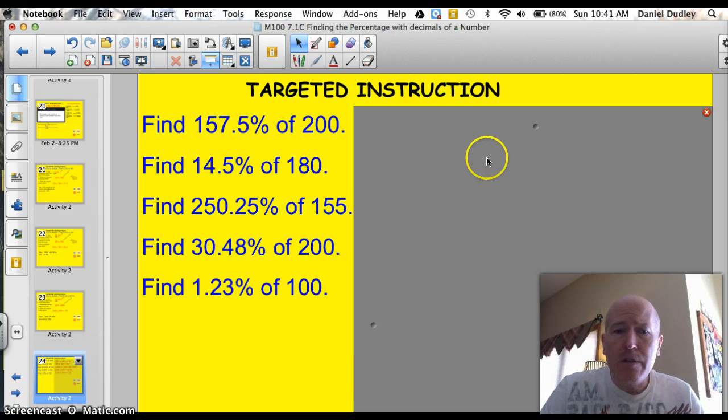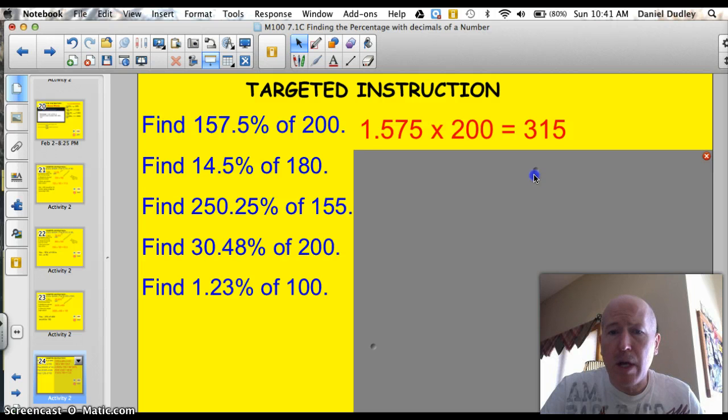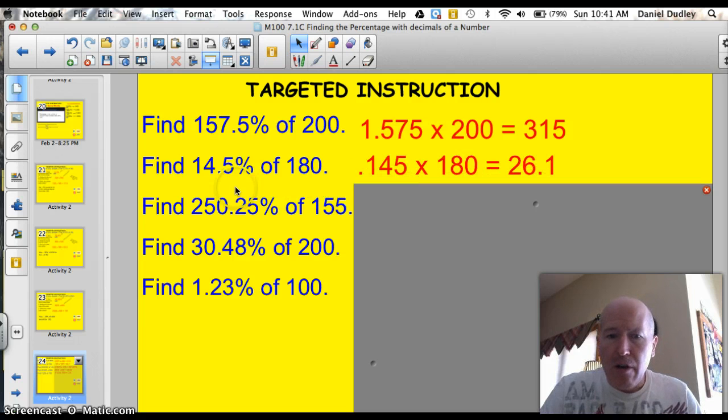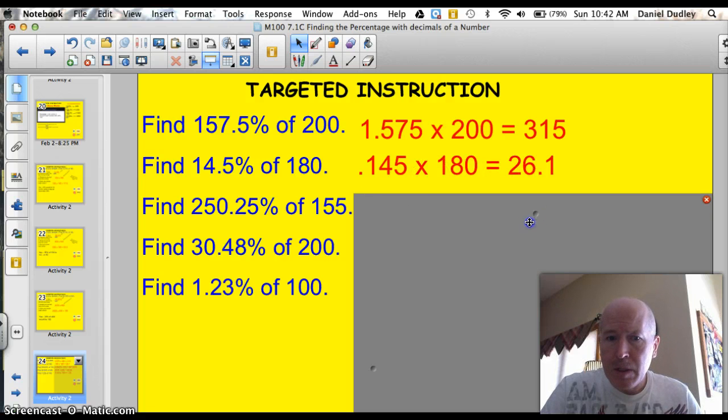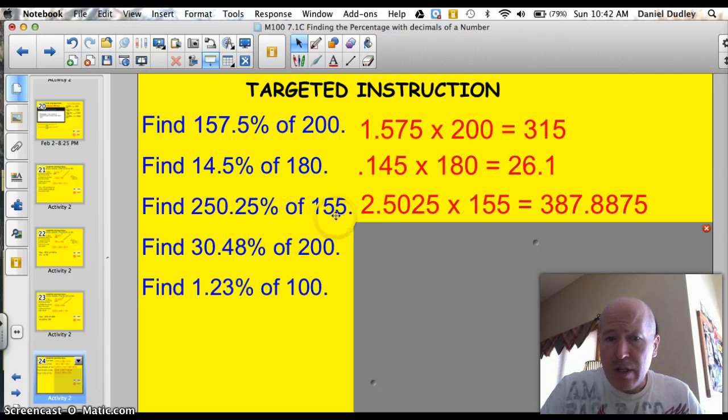All right, let's see how you did. 157.5% out of 200. Well, if you move the decimal spot, divide by 100, you're going to get 1.575 times 200, which is 315. That answer makes sense. 14.5% out of 180, move the decimal two spots, we're going to get 0.145 times 180, which is 26.1. 250.25% of 155, move it two places, you're going to get 2.5025. Did you remember to leave the 0 in there? Good, because when you move that decimal, leave the zeros as their placeholders.